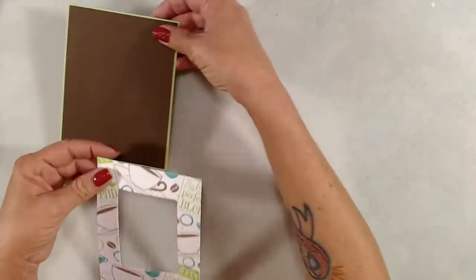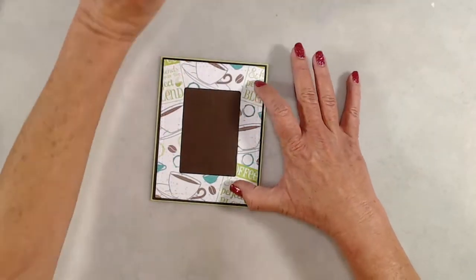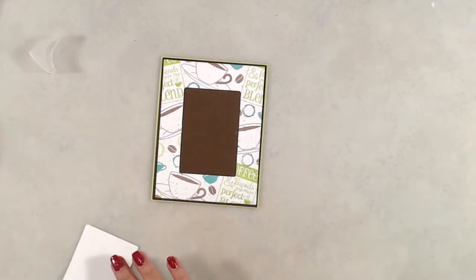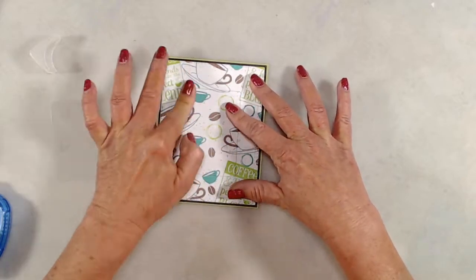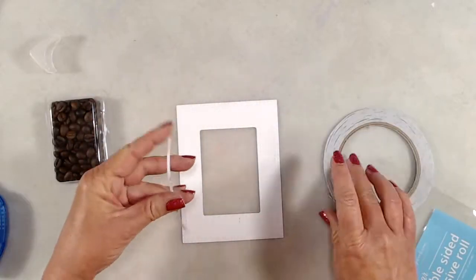I used one of the dies from the Simple Windows die set to cut out a rectangle. I used my frame as a placeholder so that I could adhere down that centerpiece. Once that centerpiece was adhered down, I put some one-eighth inch score tape on the back side of my stamped panel.